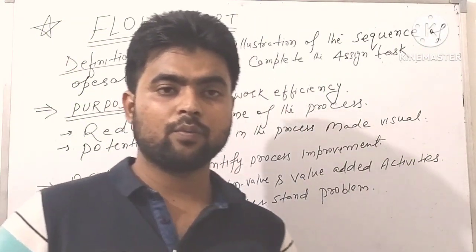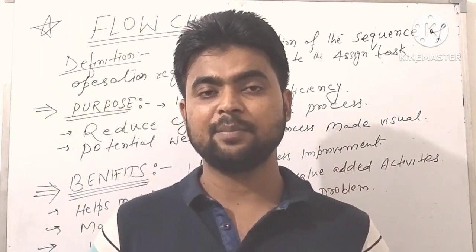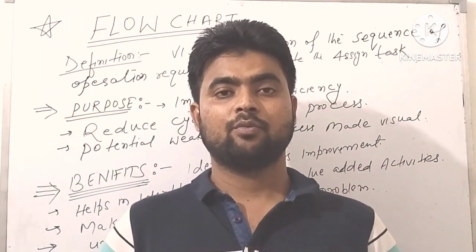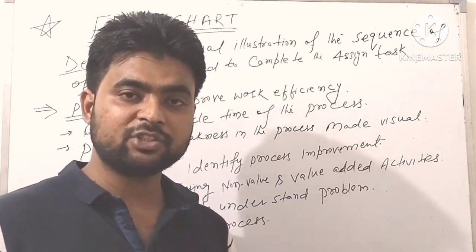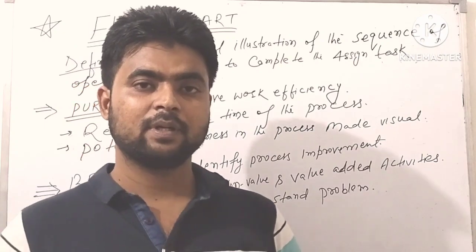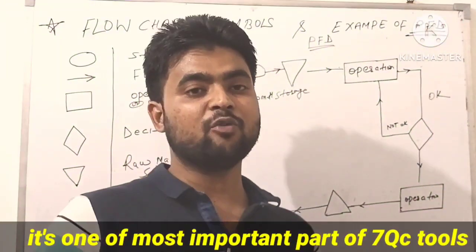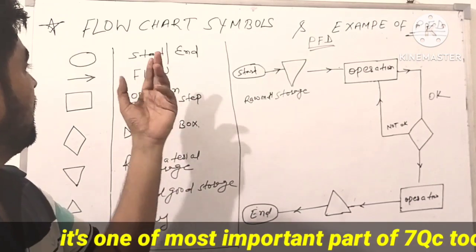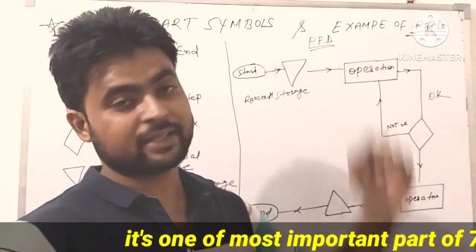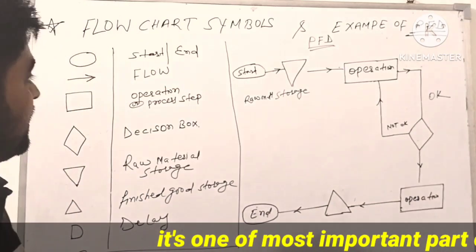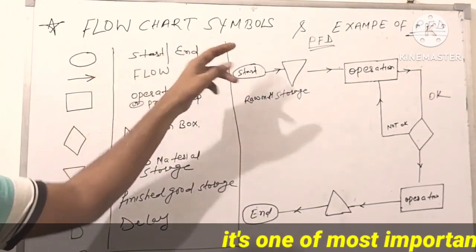Now we will discuss about how to make a flowchart diagram and what is the meaning of symbols. Now we will discuss about flowchart symbols and an example of a process flow diagram. So let's understand one by one. First of all, we will understand flowchart symbols.